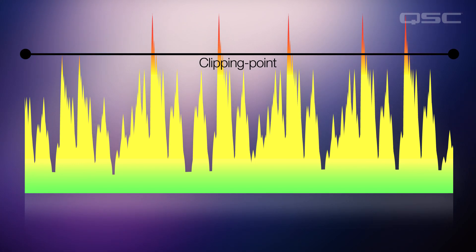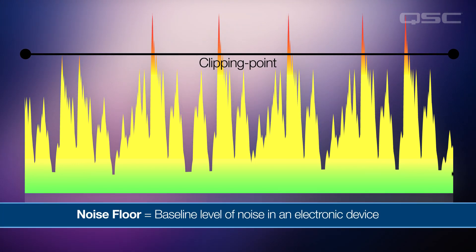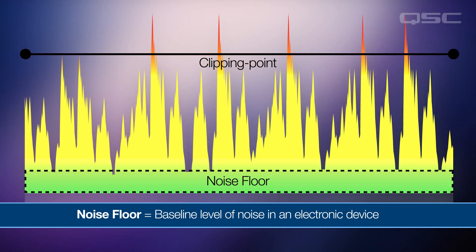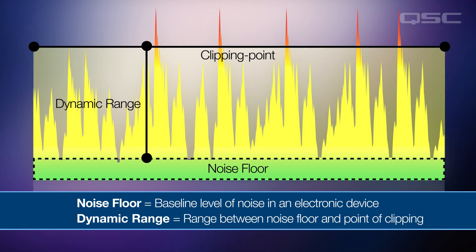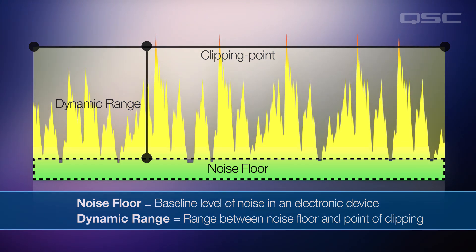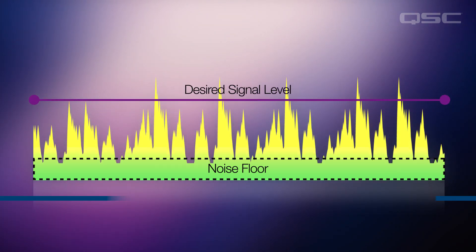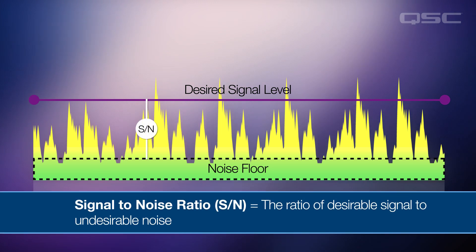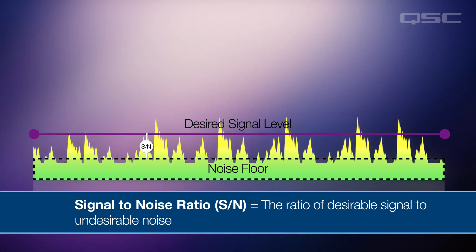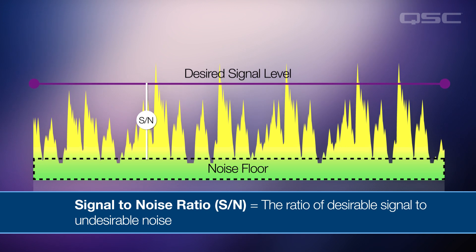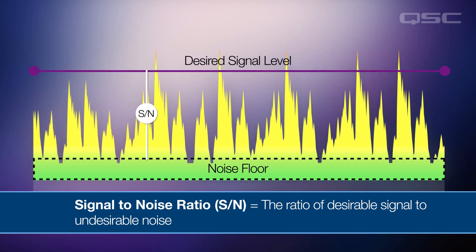At the other extreme is noise. Every device has a baseline level of noise — we call this the noise floor of the device. The range between the noise floor and the point at which the device starts clipping is called the dynamic range. The difference between the signal level and the noise level is called the signal-to-noise ratio. If the level of your signal is too low, you will have a low signal-to-noise ratio and unwanted noise is added to your signal. With a high signal-to-noise ratio, the noise essentially disappears.